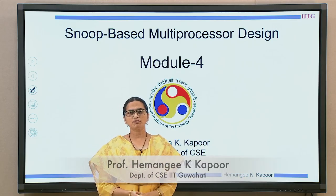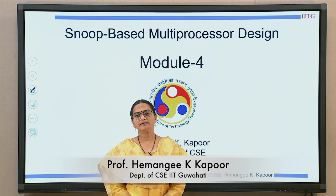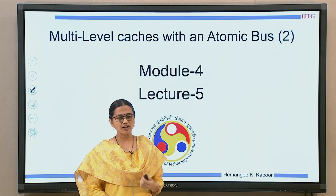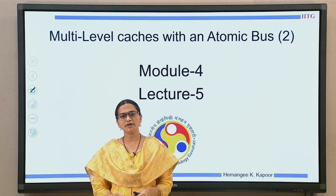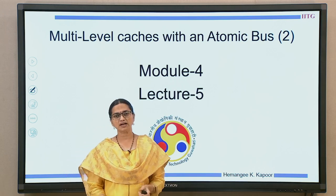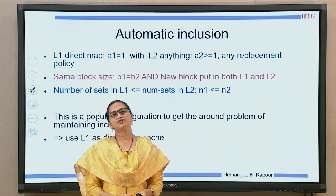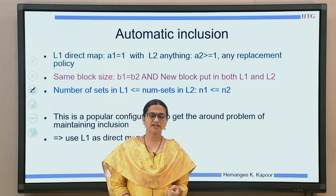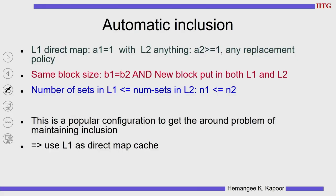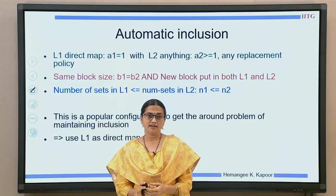Hello everyone. We are doing module 4, snoop-based multiprocessor design. This is lecture number 5, where we are continuing the topic of multilevel caches connected to an atomic bus. In the previous lecture, we have seen that inclusion is a good property which helps us to avoid the bus snooper at the L1 cache, but it is not easy to maintain.